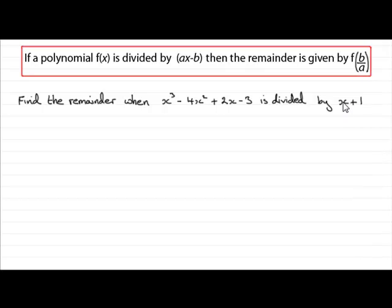Now clearly in this one, the a value is going to be 1, and the b value is going to be negative 1. Be careful here because it's minus minus 1, which will give us that plus 1. So what we've got is that a then is 1 and b is minus 1. So we've got to work out f of negative 1.